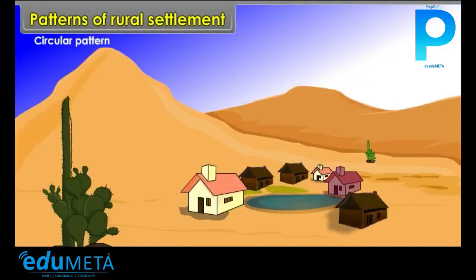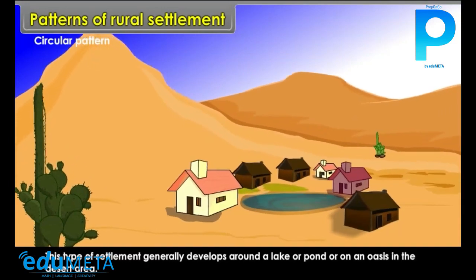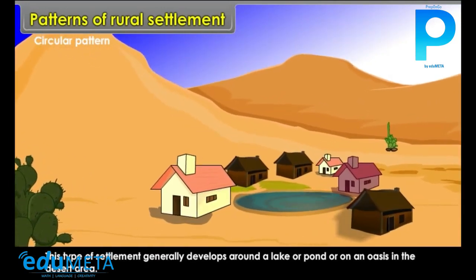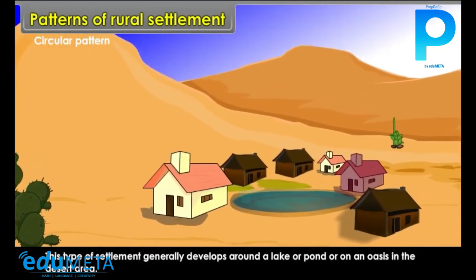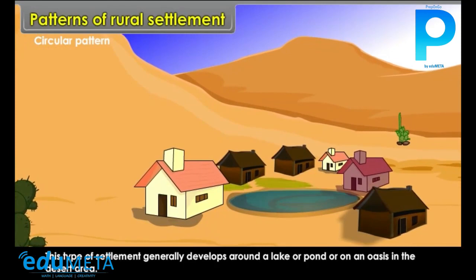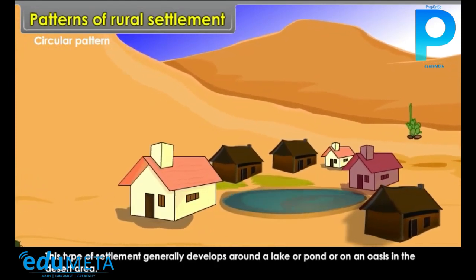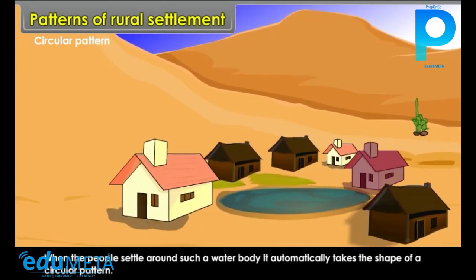Circular Pattern: This type of settlement generally develops around a lake or pond, or on an oasis in the desert area. When the people settle around such a water body, it automatically takes the shape of a circular pattern.